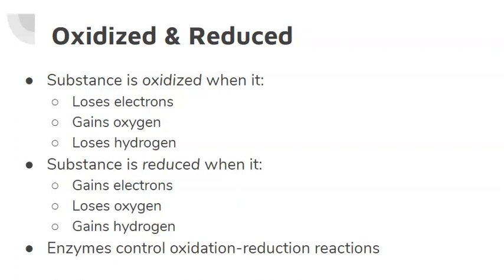Enzymes are what is in control of oxidation-reduction reactions in the body. Dehydrogenases remove hydrogens from energy-yielding compounds, and those same hydrogens are donated to oxygen to form water. Throughout this process, a large amount of energy is converted to ATP.